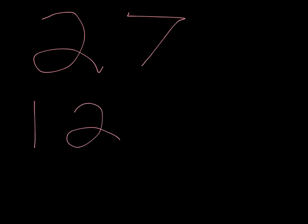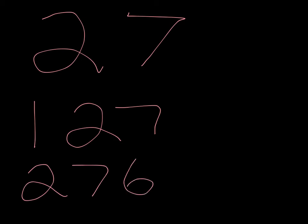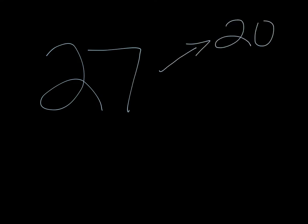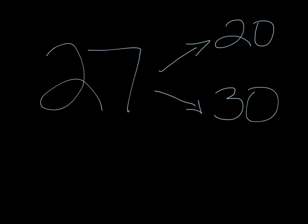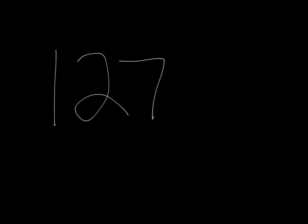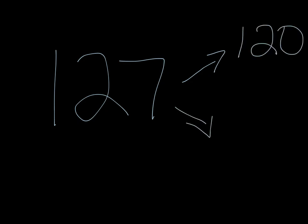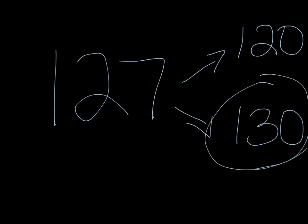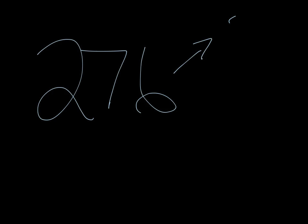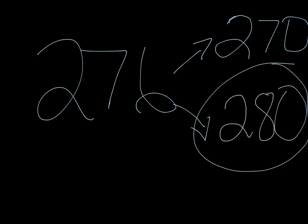I'm going to give you three numbers: 27, 127, and 276. Hit pause and round those three numbers to the nearest ten. Push play when you're ready. All right — the first number was 27. Are you going to round that down to 20 or up to 30? You should have said up to 30. Our second number was 127. Are you going to round that down to 120 or up to 130? The correct answer was 130 — good job. And our final number was 276. Are you going to round that down to 270 or up to 280? You're going to round that up. Well done.